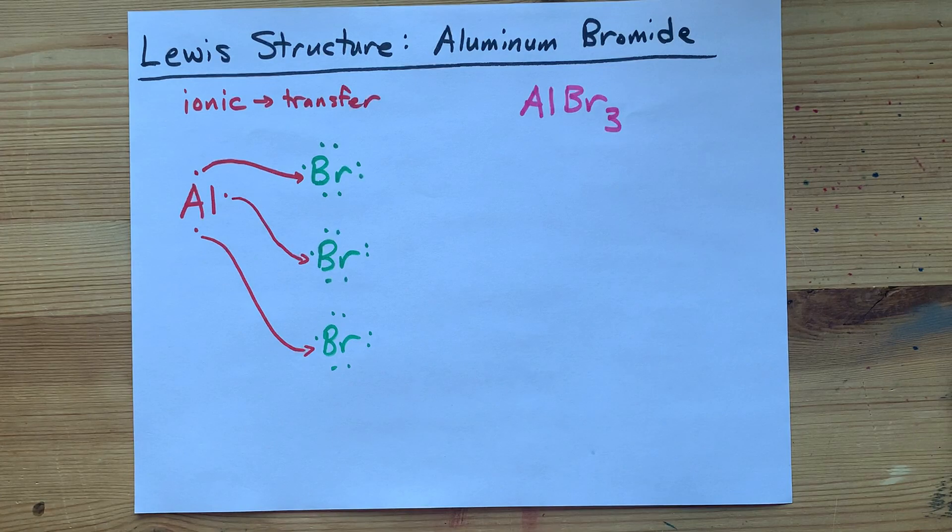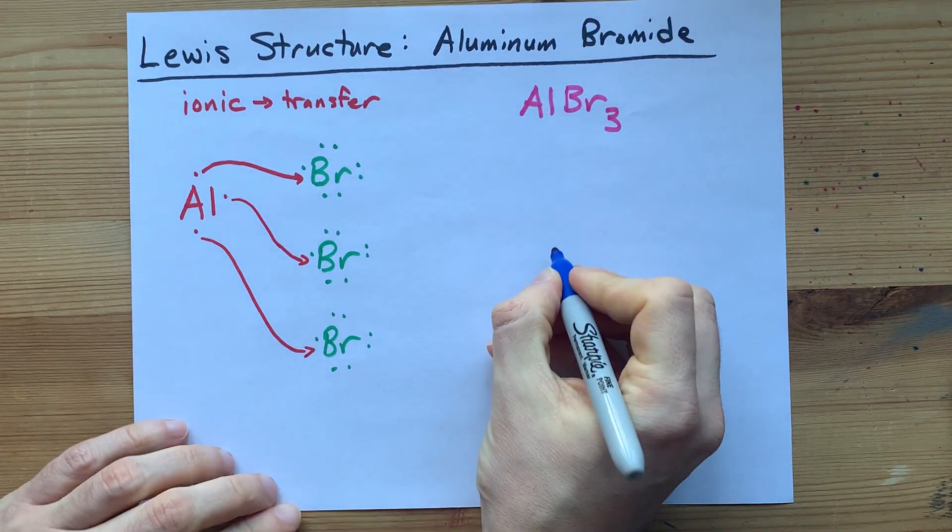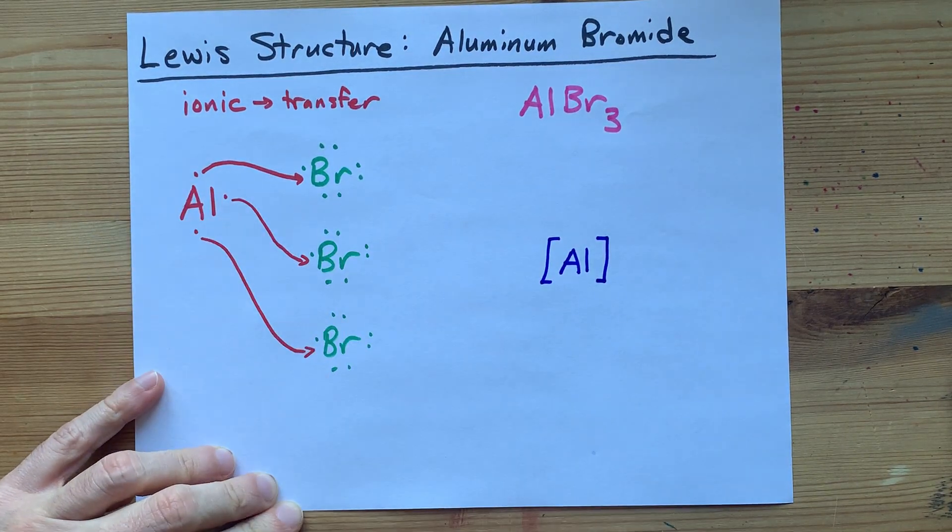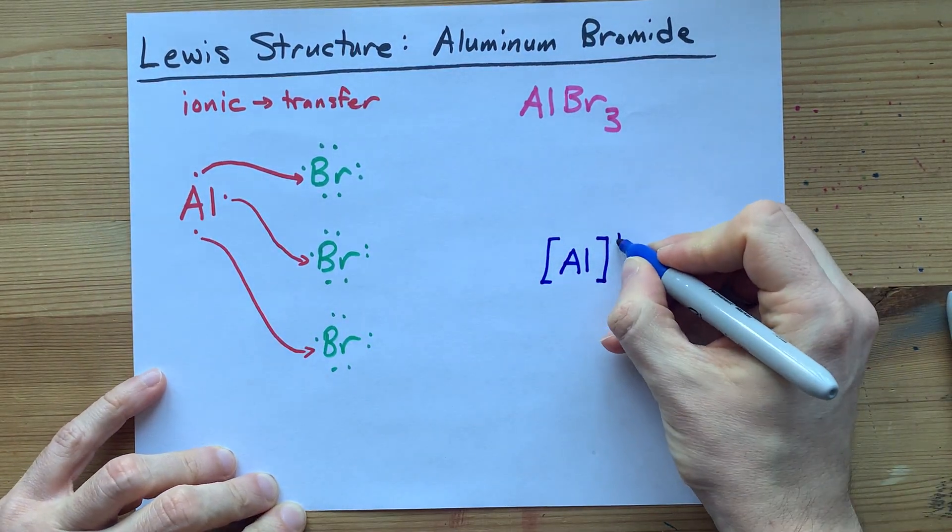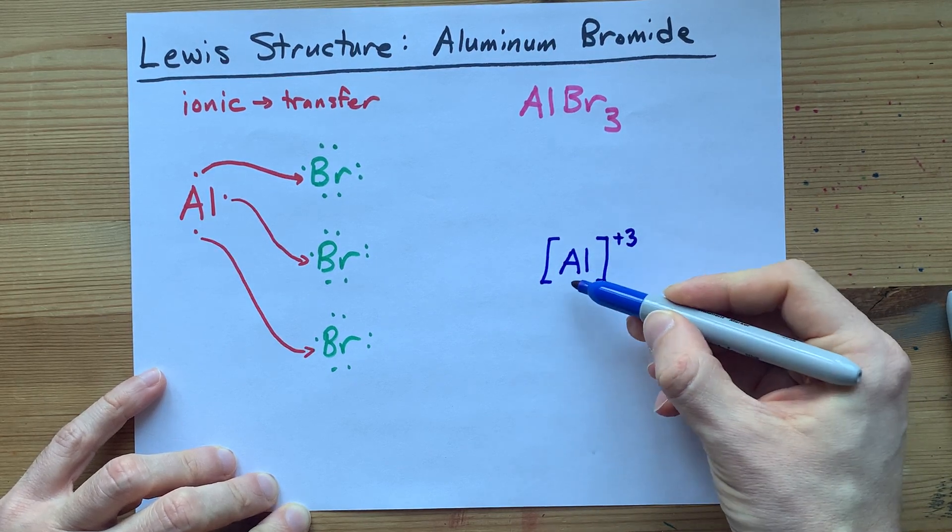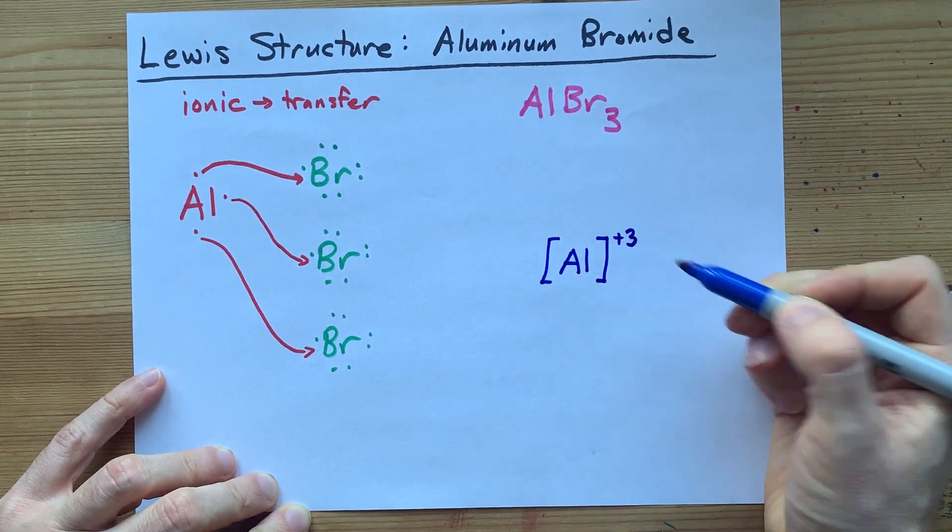Let's draw the Lewis structure together. Aluminum does not have any electrons left in what was its outer shell. So it has a plus 3 charge. That represents the loss of 3 minus 1 charged electrons.